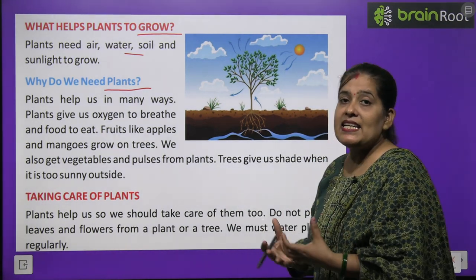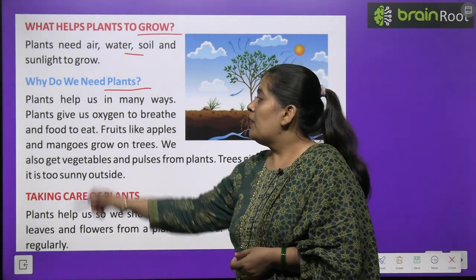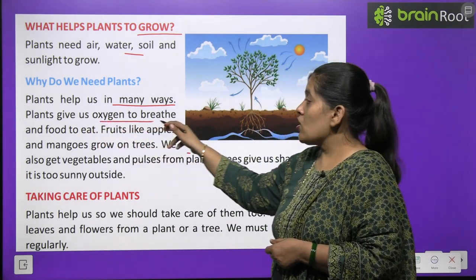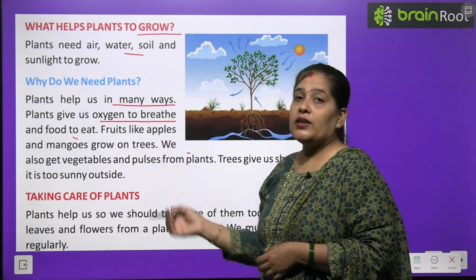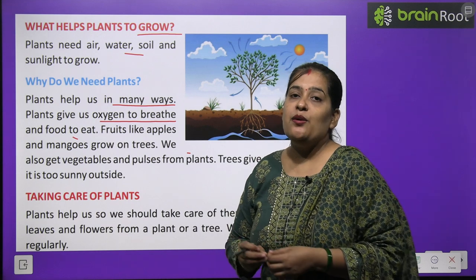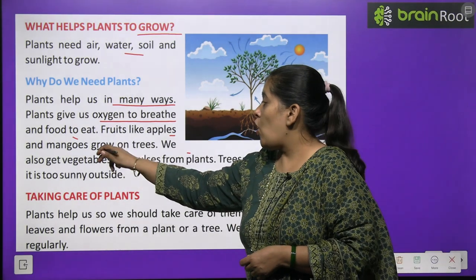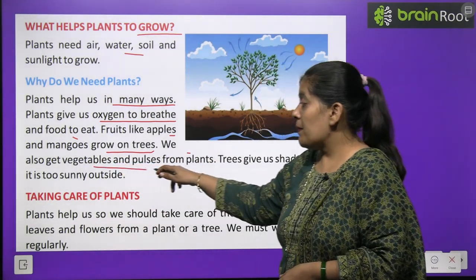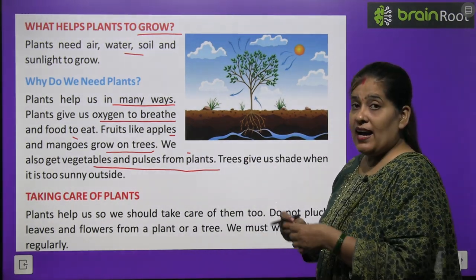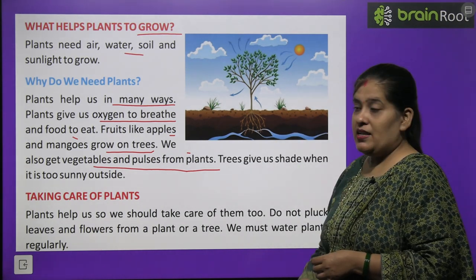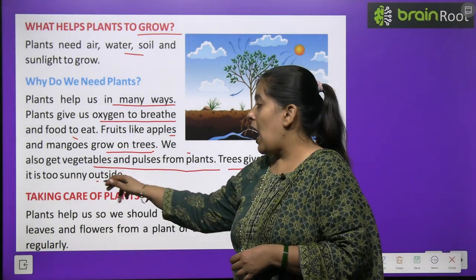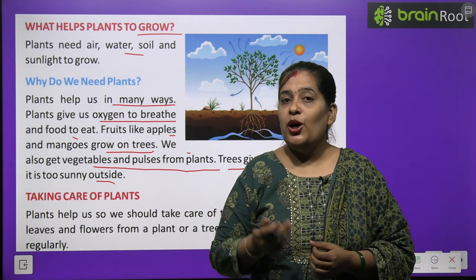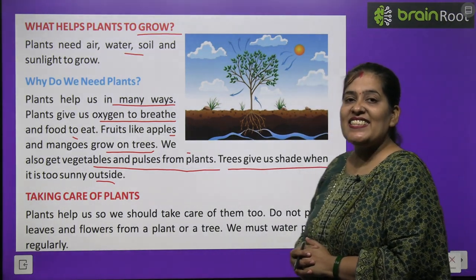Why do we need plants? हमें पौधे क्यों चाहिए? Plants help us in many ways. Plants give us oxygen to breathe and food to eat. पौधे हमें सांस लेने के लिए oxygen देते हैं और खाने के लिए भोजन देते हैं। Fruits like apples and mango grow on trees. We also get vegetables and pulses from plants. The trees give us shade when it is too sunny outside — पेड़ हमें छाया देते हैं जब बाहर बहुत तेज धूप या गर्मी हो।